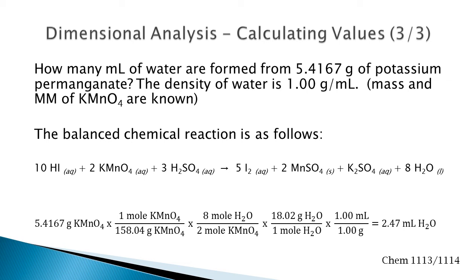Get the potassium permanganate into moles. Do a mole ratio, this time to water: 8 moles of water for every 2 moles of potassium permanganate.